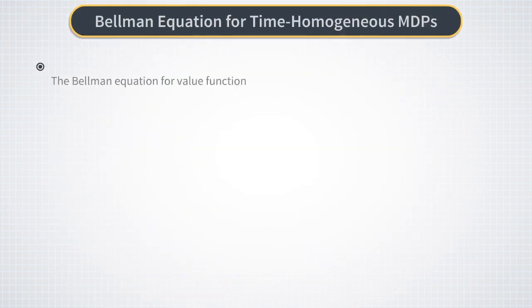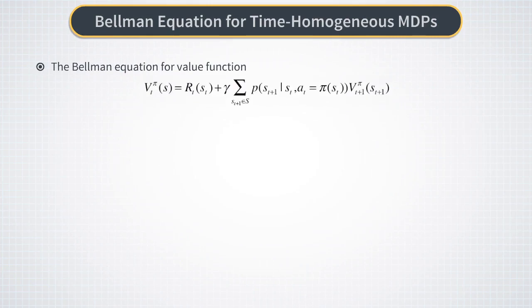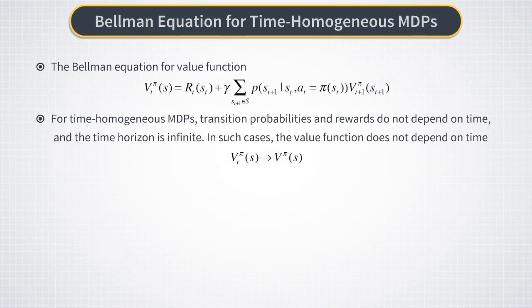A special case arises when the Markov decision process is such that time does not appear as an independent variable. That means that for such MDPs, transition probabilities and reward cannot explicitly depend on time, and the final time T is infinite in the problem. So there is an infinite sum in the definition of the value function.